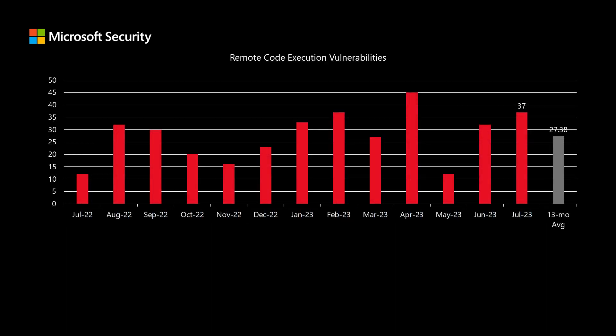When we look at the number of remote code execution vulnerabilities — these are the ones that typically present the most risk, as they would allow a threat actor to install software and perform other malicious actions — we've been averaging almost 27.5 per release. This month, there are 37 remote code execution vulnerabilities.